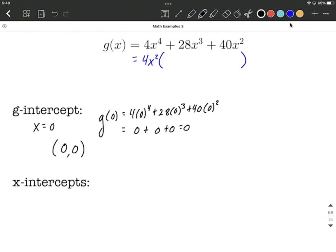And on the inside, 4x squared times x squared would give us 4x to the 4th. 4 times positive 7 makes positive 28, and x squared times x makes x cubed. And finally, 4 times positive 10 makes 40, and x squared times 1 would be our x squared. So on the inside here, it really is x squared plus 7x plus 10.